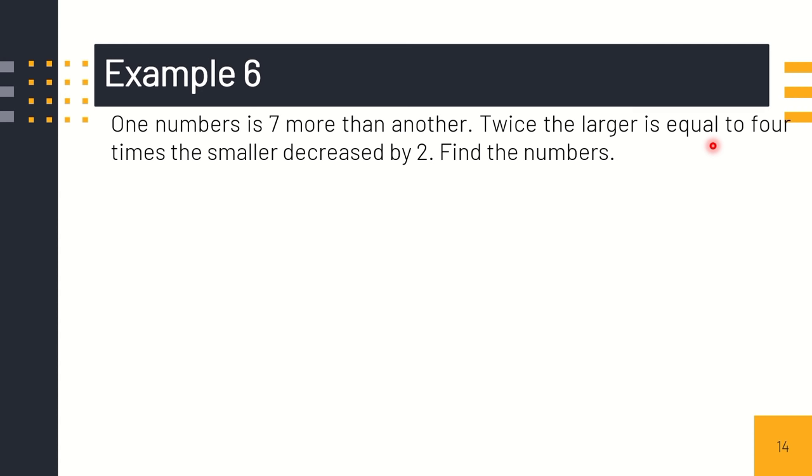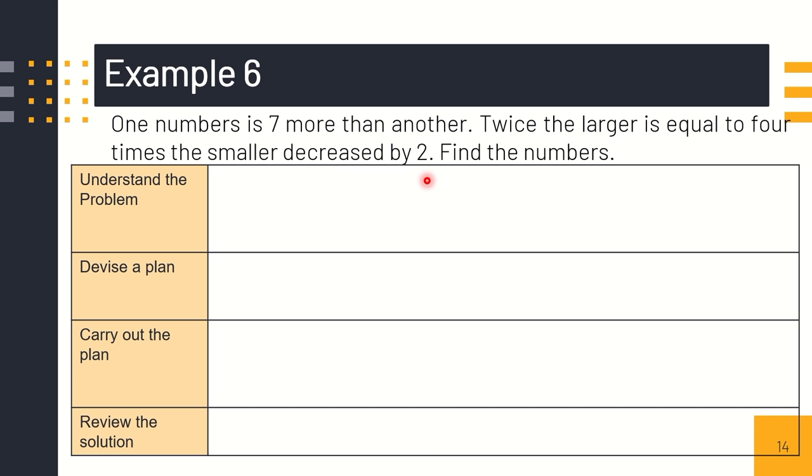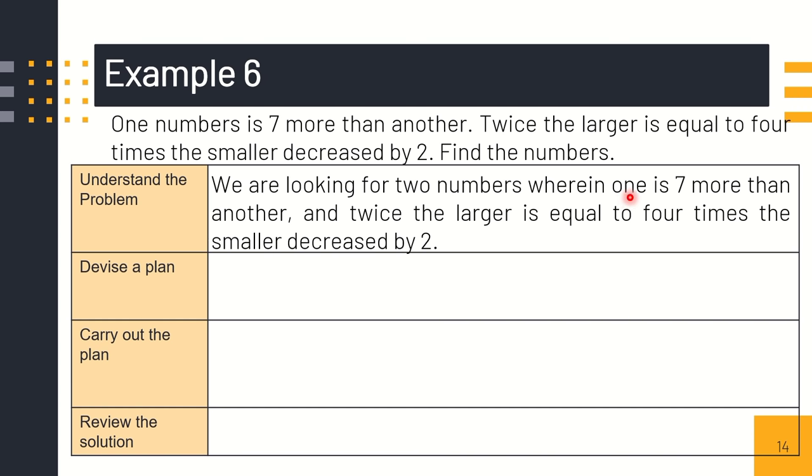I'll give you the last example in this video lesson. One number is 7 more than another. Twice the larger is equal to 4 times the smaller decreased by 2. Find the two numbers. Here we'll represent variables, like in example number 5. We're looking for two numbers wherein one is 7 more than another and twice the larger is equal to 4 times the smaller decreased by 2. We can represent x as the smaller number, and x plus 7 is the larger number.